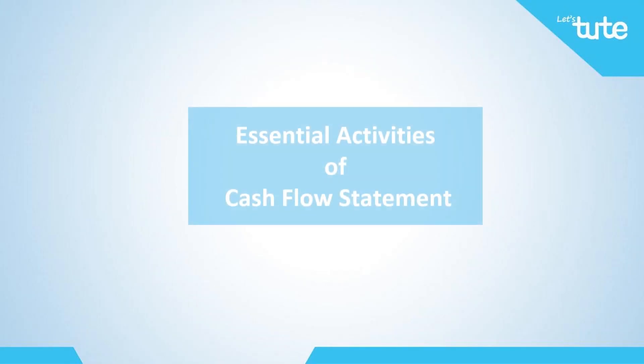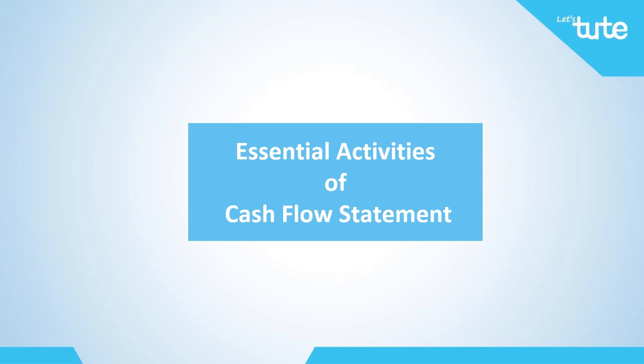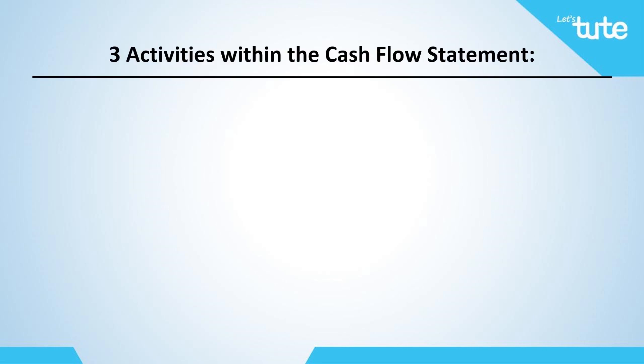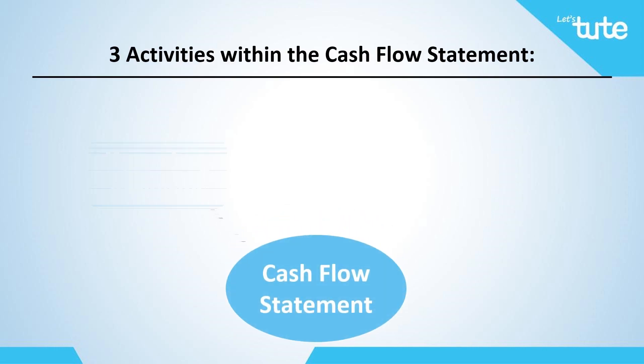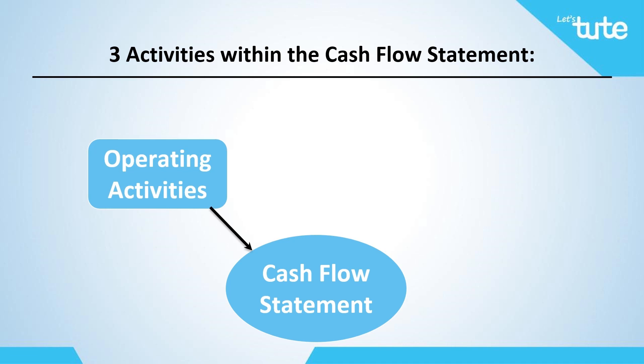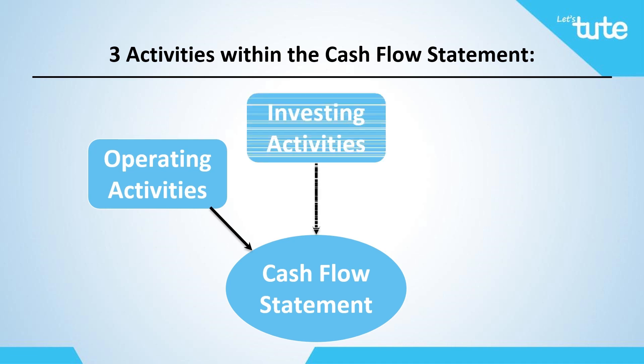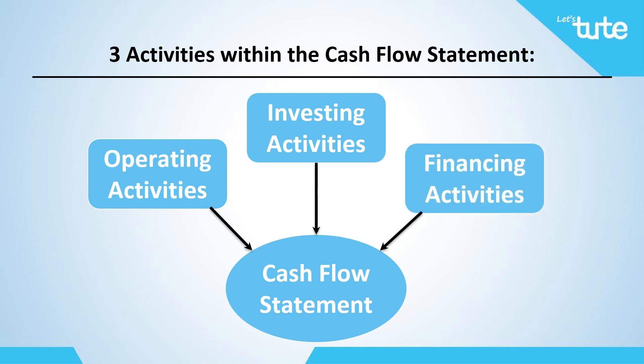Let's start by identifying the primary activities within the cash flow statement. These activities can be classified under three headings. The first heading is cash flow from operating activities. Next we will look at cash flow from investing activities. And lastly we will look at cash flow from financing activities. For better understanding and presentation, all the cash inflows and outflows — in other words cash movements — are classified under these three headings.